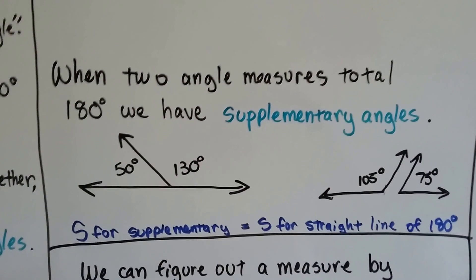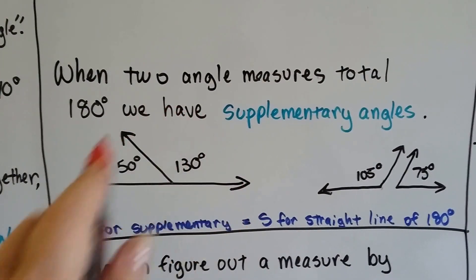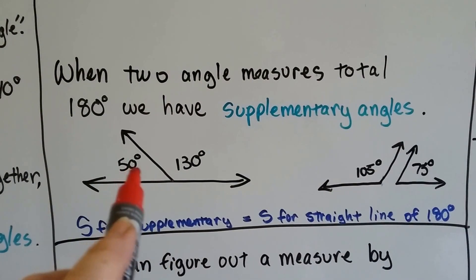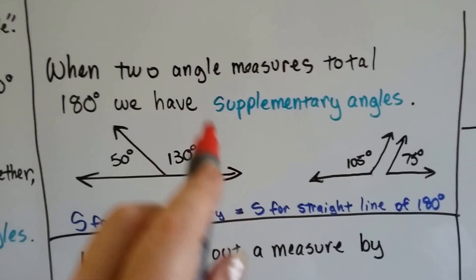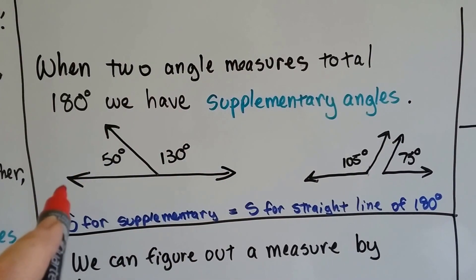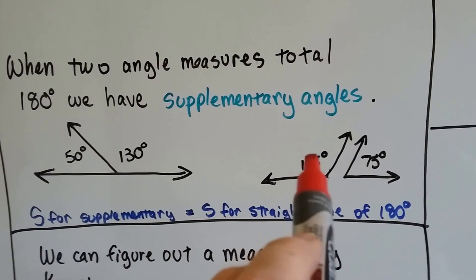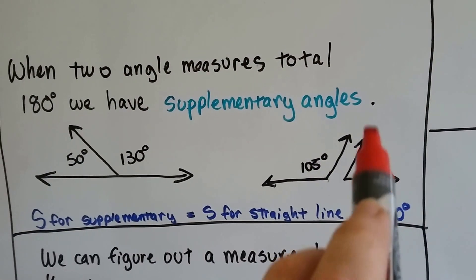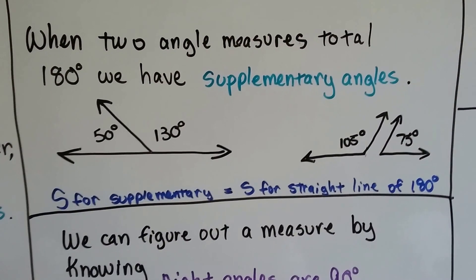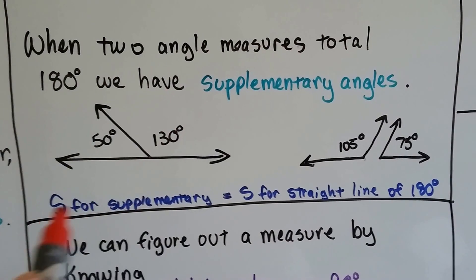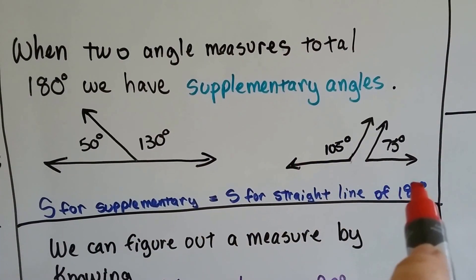When two angle measures total 180 degrees, that's like a half circle. We have supplementary angles. So a 50 and a 130 totals 180. We have a straight line. We have a half circle of 180 degrees. And again, they don't have to touch each other. They don't have to be adjacent. But a 105 degree angle and a 75 degree angle are supplementary angles to each other, because they total 180. So you can think S for supplementary is like S for straight line. And that will make you remember 180.